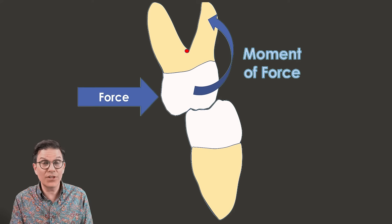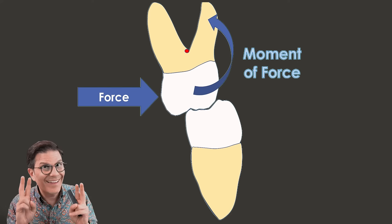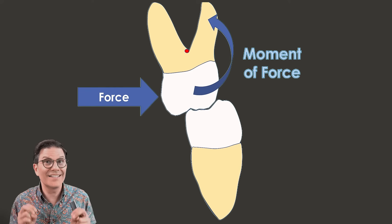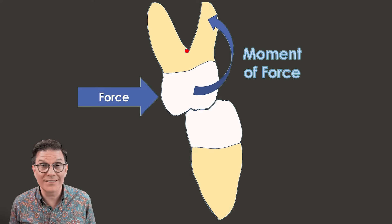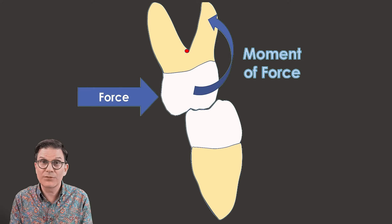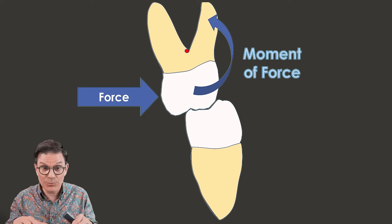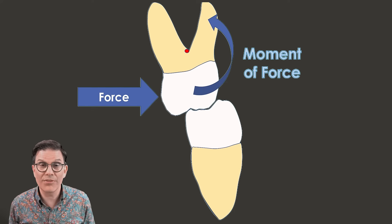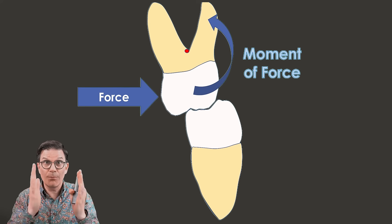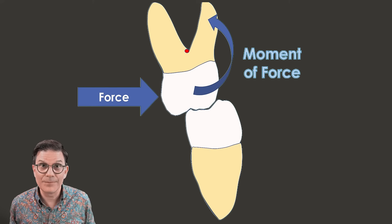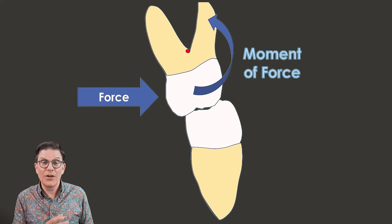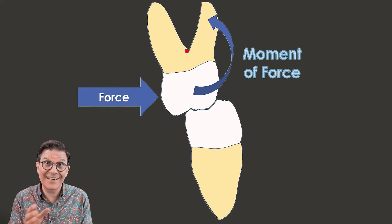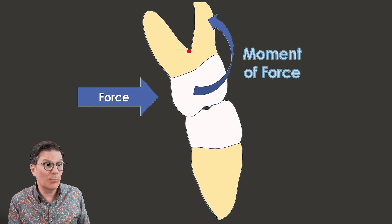If you've done Invisalign cases with expansion, you've probably ended up with posterior open bites or only the palatal cusps touching in occlusion, with the buccal cusps open. This happens because of the moment of force: the upper molars end up with an undesirable angulation — something you don't want to see. If we try to correct a crossbite with this kind of mechanics, we can end up with an edge-to-edge bite, which is worse than staying with the initial crossbite.